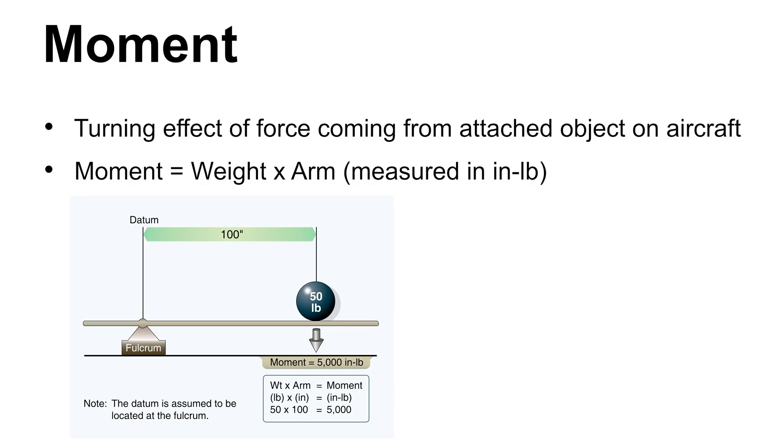The final important concept to understand is moment. The moment refers to the turning effect of the force coming from an attached object on the aircraft. This force in our case is the gravity force of an object. You compute the moment of an object as its mass multiplied by its arm. Thus, heavier objects with longer arms will have larger moments.